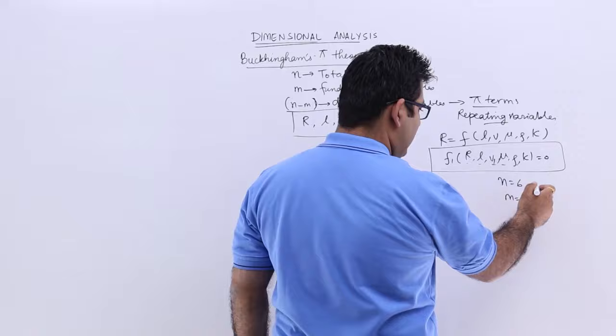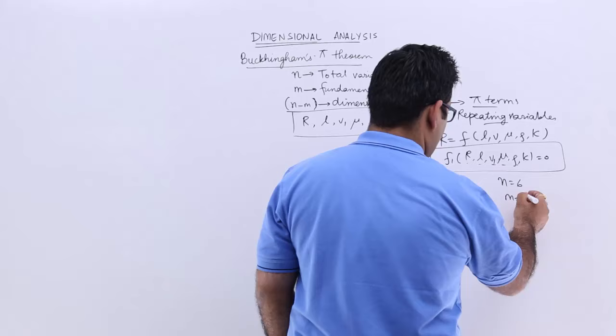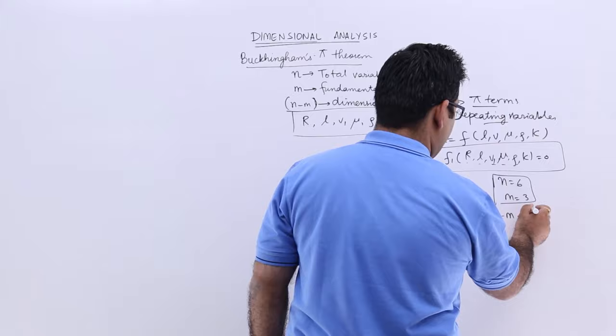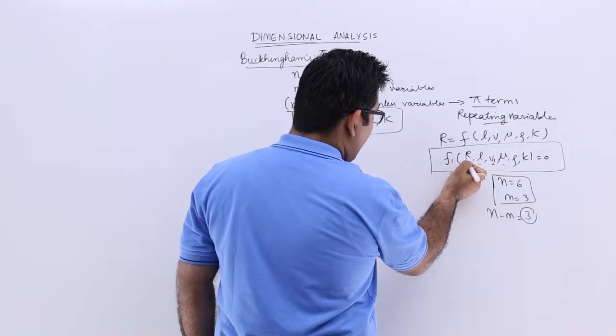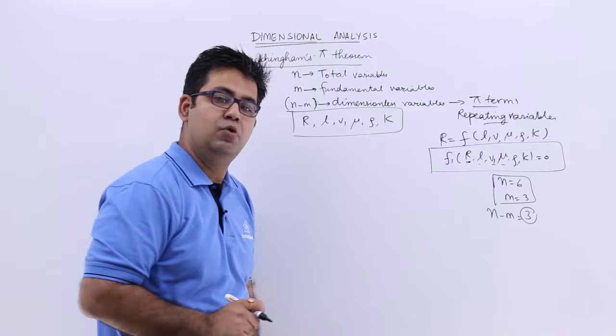The number of fundamental variables would be 3 in this case: M, L, and T. So the number of fundamental variables are 3, and the number of pi terms that have to be formed are also 3. This means I have to choose 3 repeating variables. You cannot have R as a repeating variable because R is dependent upon L, V, mu, rho, and K.